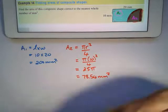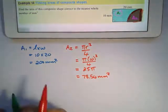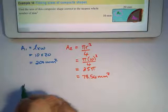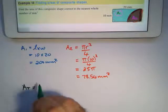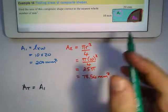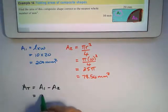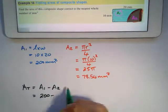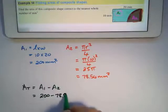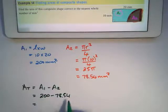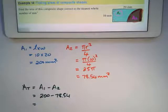So what's my total area? My total area will be area one, the blue bit, take away area two, which is 200 take away 78.54. That will give us an answer of 121.46.